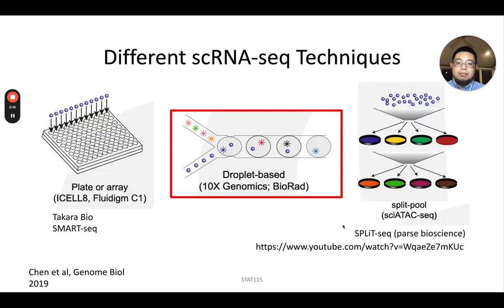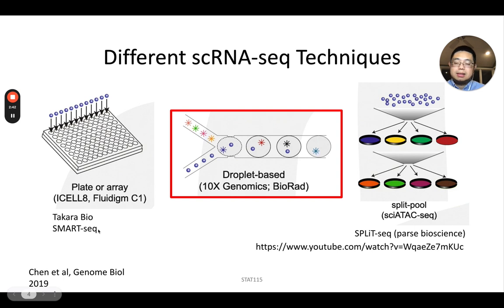There are other single-cell RNA sequencing technologies, such as plate-based methods, where cells are sorted into single wells on a plate and then reverse transcription and library prep occur in that well. Smart-seq is one of them — it is not UMI-based but sequences the full length of mRNA and usually has much deeper sequencing depth compared to 10x data, but it produces far fewer cells — a couple of hundred — whereas 10x data can yield thousands or even tens of thousands of cells per run.